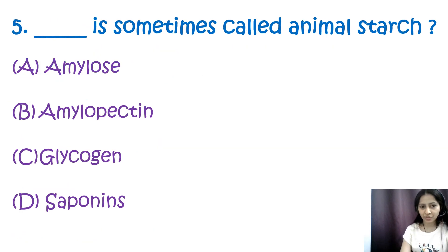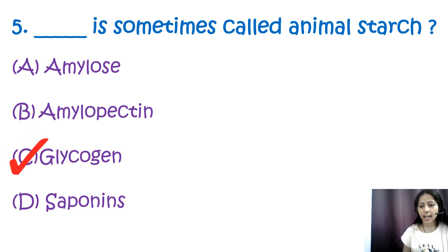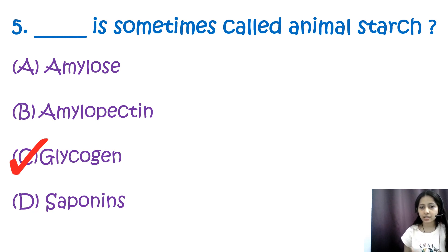Question 5: What is sometimes called animal starch? Options are amylose, amylopectin, glycogen, and saponins. The correct answer is C, glycogen. Glycogen is sometimes called animal starch. It is a multi-branched polysaccharide of glucose units that serves as a form of energy storage in animals.